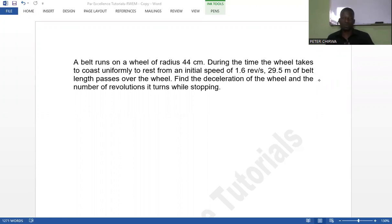A belt runs on a wheel of radius 44 centimeters. During the time the wheel takes to coast uniformly to rest from an initial speed of 1.6 revolutions per second, 29.5 meters of belt length passes over the wheel. Find the deceleration of the wheel and the number of revolutions it turns while stopping.